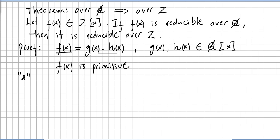Let a be the least common multiple of the denominators of the coefficients of g(x). So we take the LCM of those denominators and we get a. Similarly, let b be the least common multiple of the denominators of the coefficients of h(x).